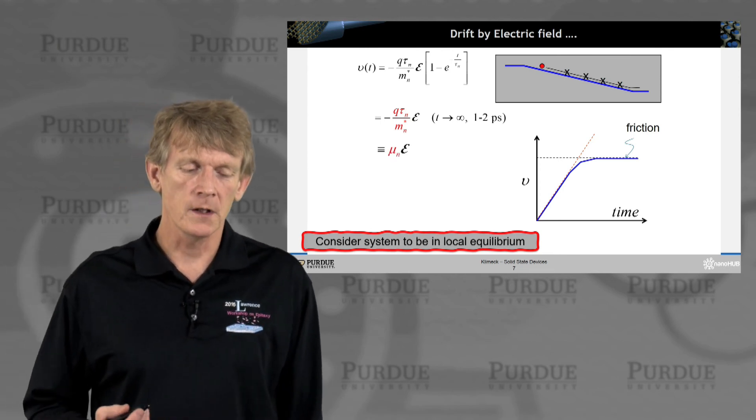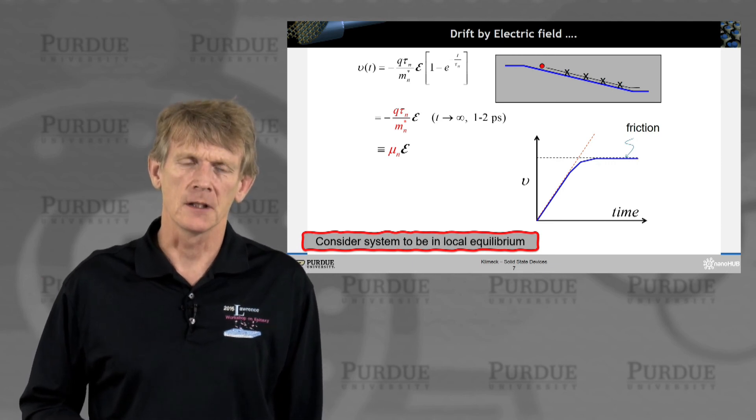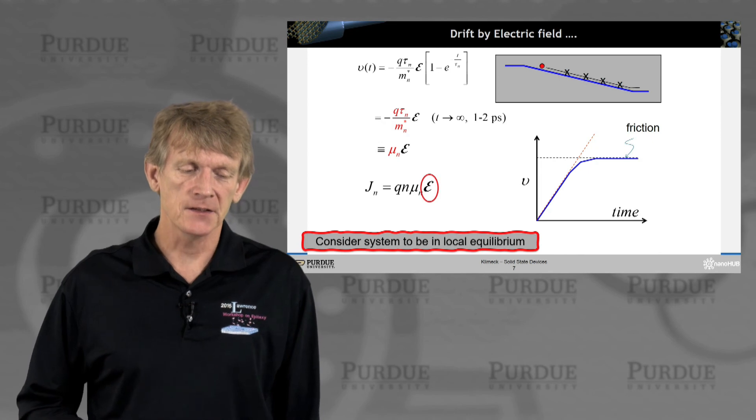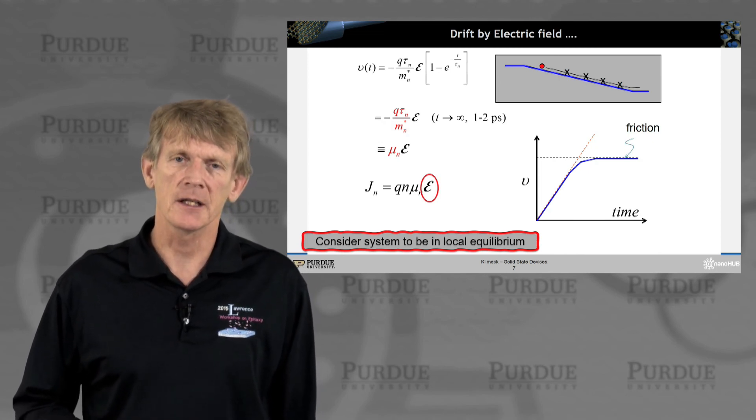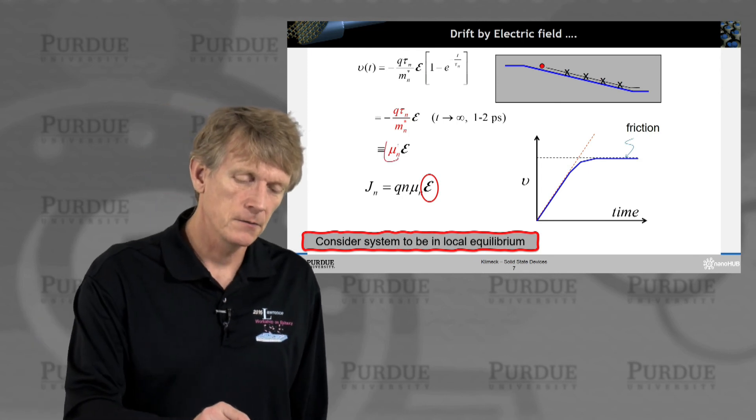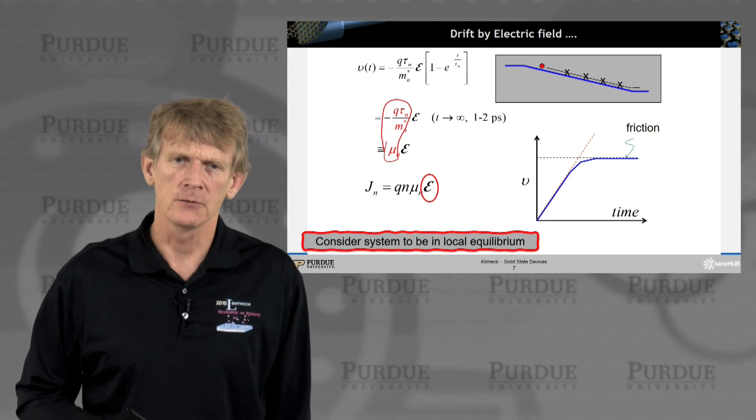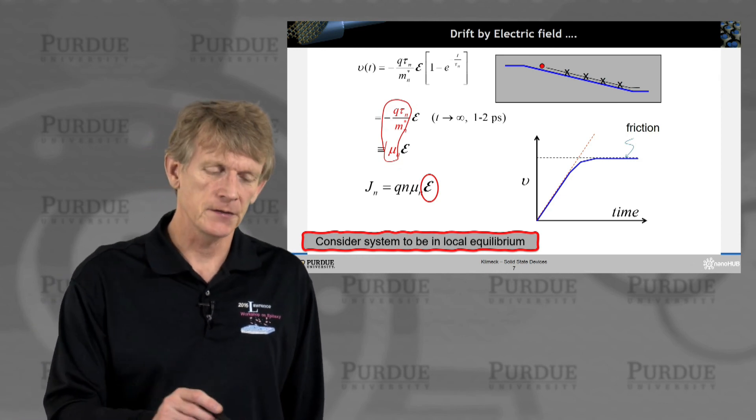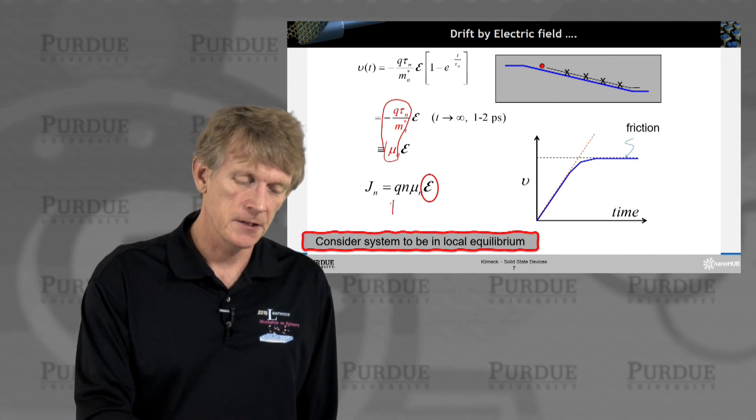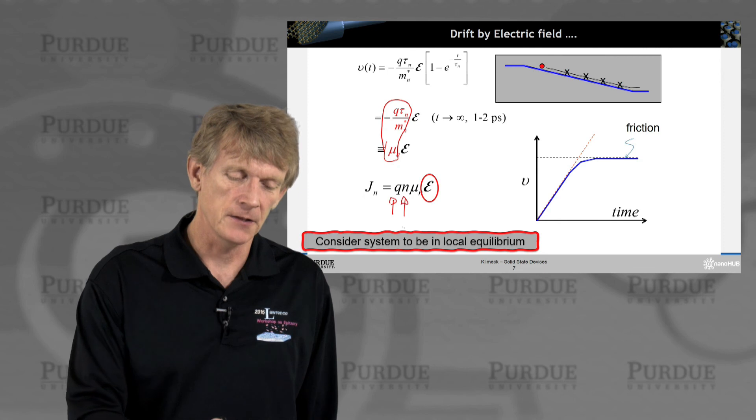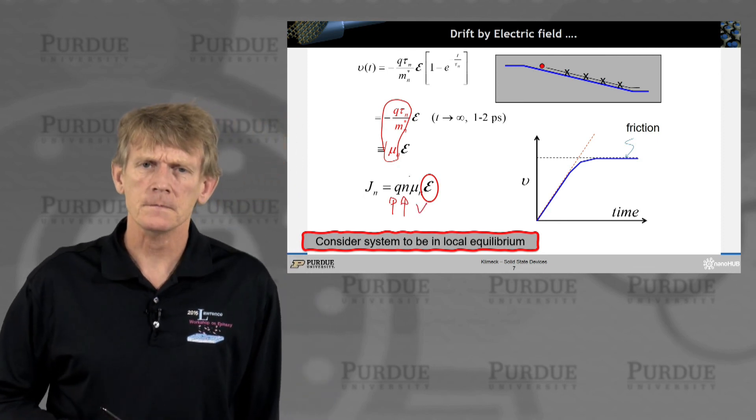So at the end, you end up with a mobility that you lump together with the electric field. So that is how the drift field really comes to be. So you say that you have a mobility term that is really depending on the relaxation of the carriers. And of course, current is charge times velocity. Here's the charge in elemental charge. Here's the electron density. And here's the velocity.